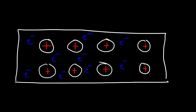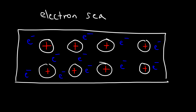But this is different from the covalent bonds that we see in molecules, because this electron here is not just shared between two atoms — in fact it can be shared among thousands of atoms. And so this model is known as the electron sea model. The metal cations are surrounded by a sea of valence electrons.